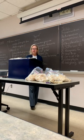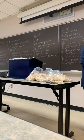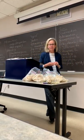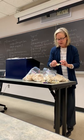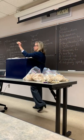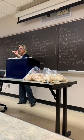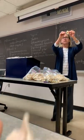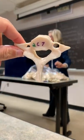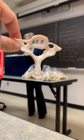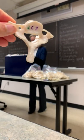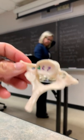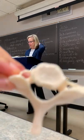The last unique vertebra is C7, sometimes called the vertebral prominence. C7 is unique because it has the longest spinous process of all the cervical vertebrae. You can usually palpate it — if you run your fingers down the back of your neck, the first big bump you feel is the vertebral prominence, the spinous process of C7.